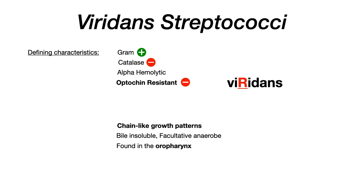The defining characteristics, as just mentioned: gram-positive, catalase-negative, alpha-hemolytic, optochin-resistant — remember that R in viridans for resistant. This bacterial pathogen exhibits chain-like growth patterns. It's also bile insoluble, which differentiates it slightly from strep pneumoniae, since strep pneumoniae is actually bile soluble. And just like strep pneumoniae, viridans strep is a facultative anaerobe.